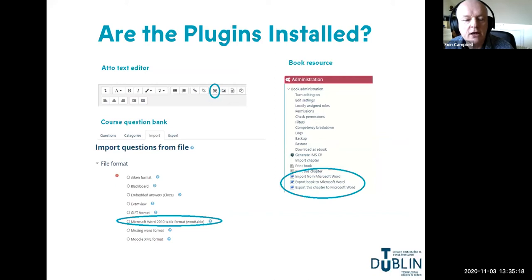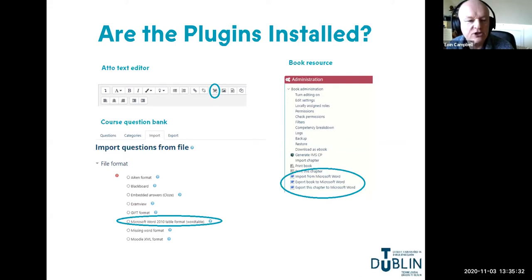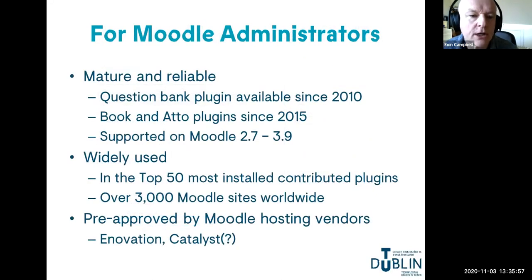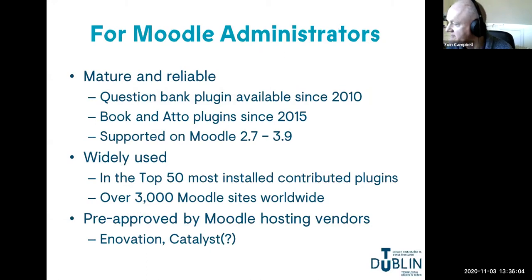There's a quick and easy way to check if the plugins are installed on your Moodle site. In the auto text editor you should see a little Word icon in the toolbar. If you're importing questions, you'll see 'Microsoft Word table' as a possible format. In a Book resource, you'll have facilities to import from Microsoft Word or export to Word. If you don't have them installed, you need your local Moodle administrator to do so. The plugins are mature, reliable, widely used - in the top 50 most installed contributed plugins out of about 1,500 - and pre-approved by Moodle hosting vendors including Innovate in Ireland and Catalyst in the UK.